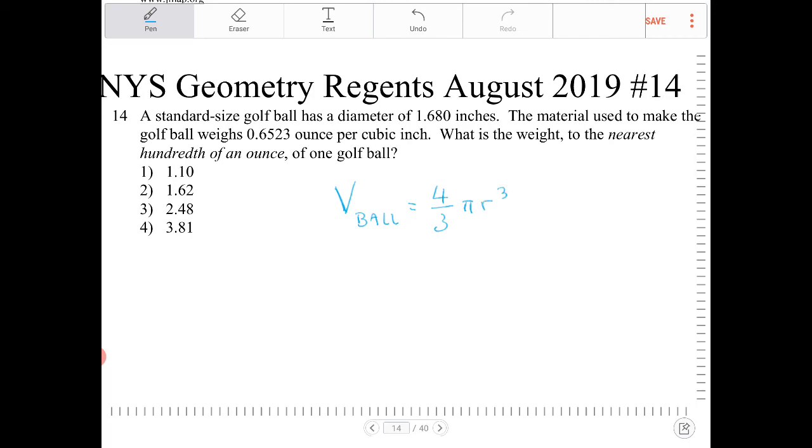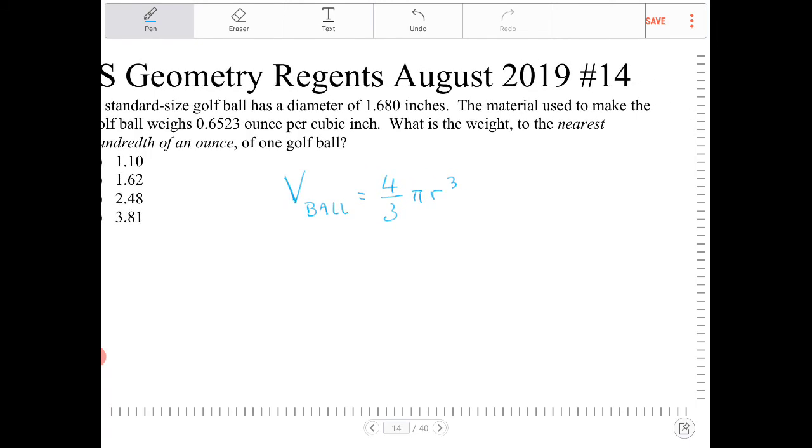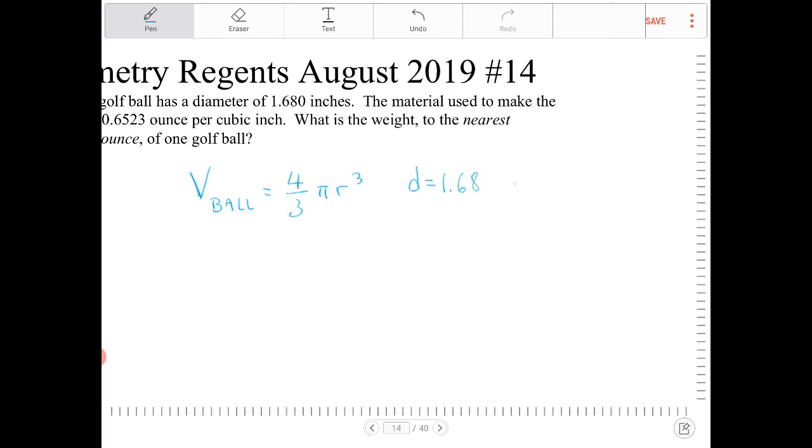Since we're told the diameter is 1.68, the radius therefore will be 0.84.